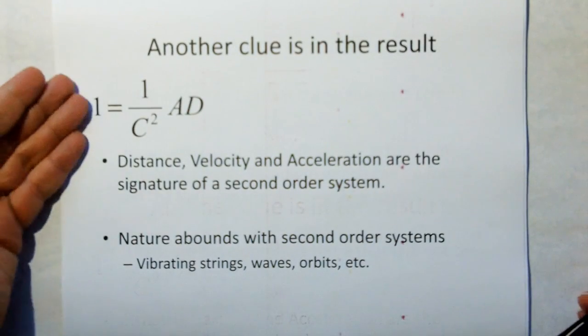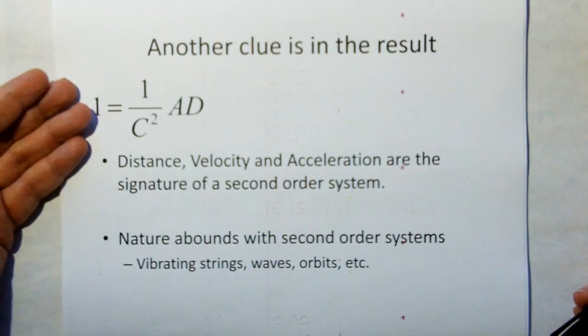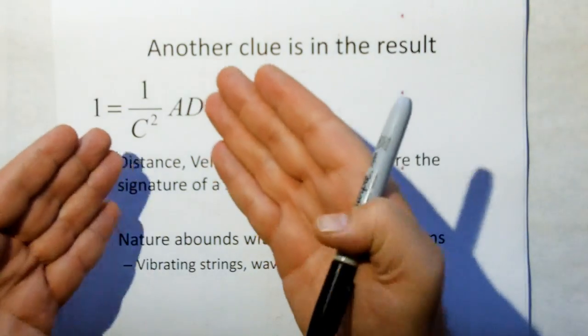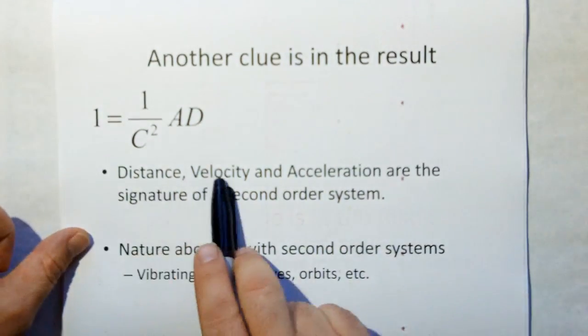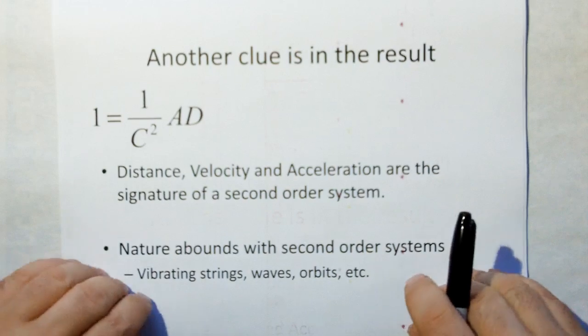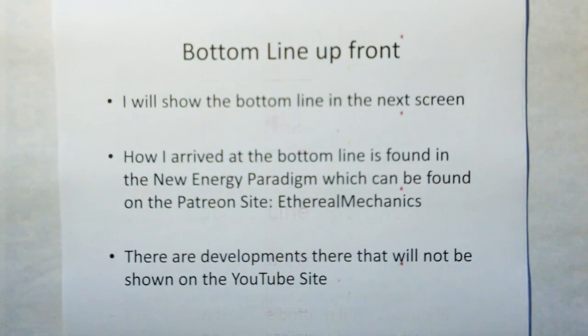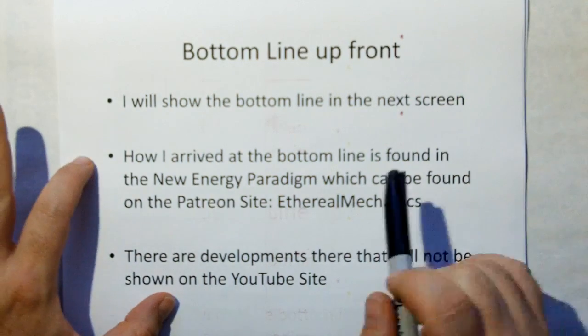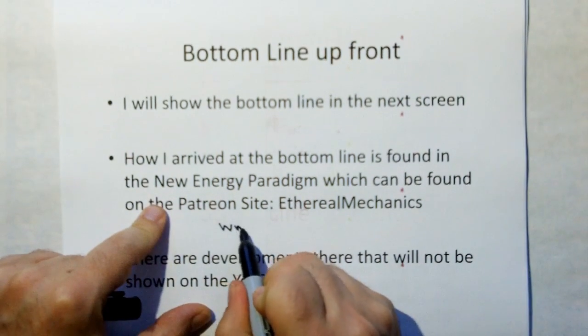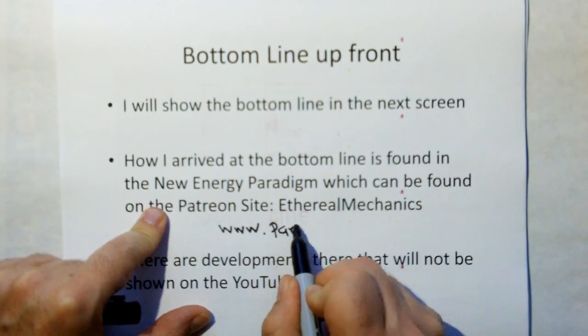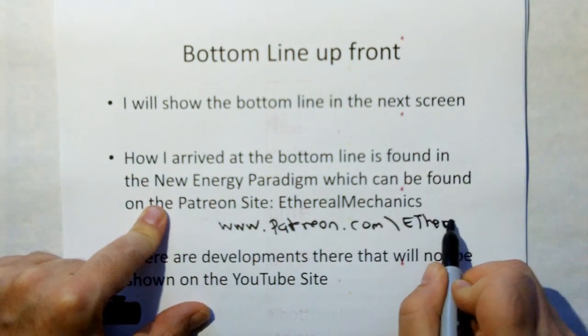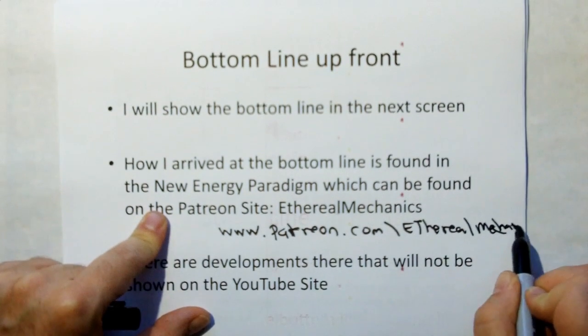Another clue is in the result. This is the precipitate from getting mass and energy out of the equation, the difference between the two. Distance, velocity, acceleration are the signature of a second order system. Nature abounds with second order systems. Let me give you the bottom line up front. How I arrived at the bottom line can be found in the new energy paradigm at the Patreon site, Ethereal Mechanics, www.patreon.com/etherealmechanics.